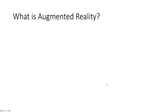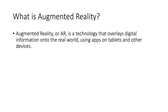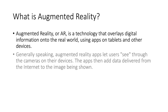What is augmented reality? Augmented reality, or AR, is a technology that overlays digital information onto the real world using apps on tablets and other devices. Generally speaking, augmented reality apps let users see through the cameras on their devices. The apps then add data delivered from the internet to the image being shown.